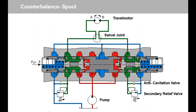Primary pressure relief valve in P-supply line. Integral secondary pressure relief valves and anti-cavitation check valves. Simple and robust design for fixed and variable pumps. Cost-effective components. Relatively insensitive against contamination.